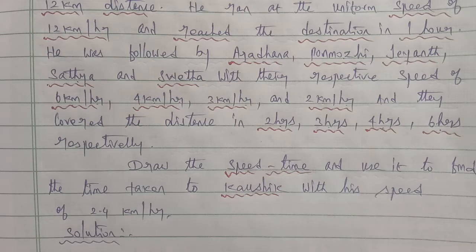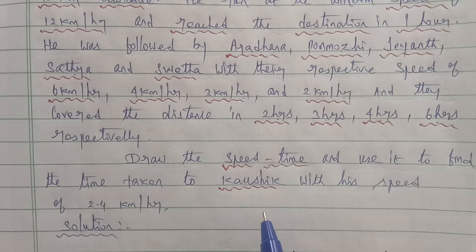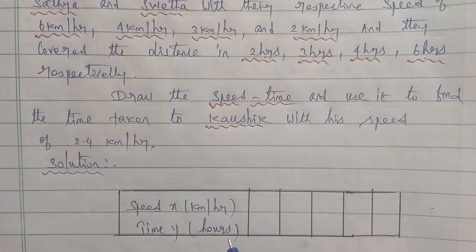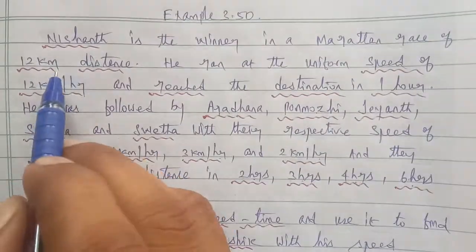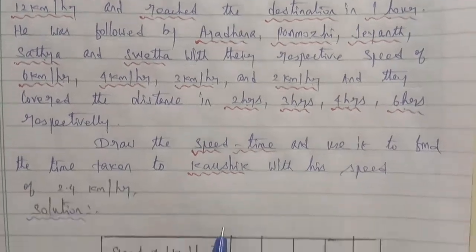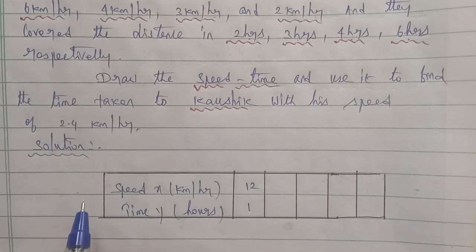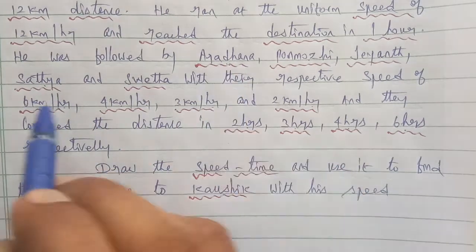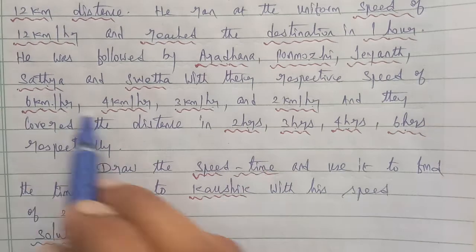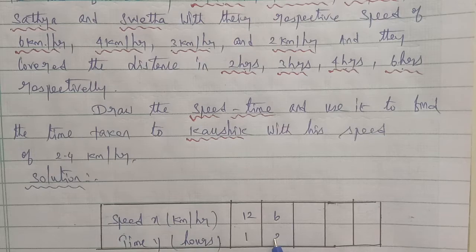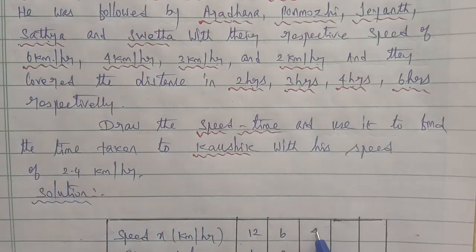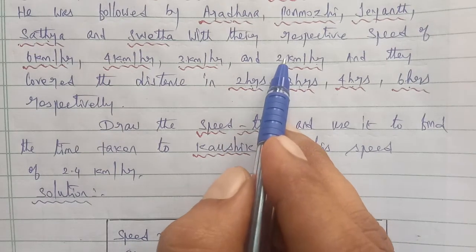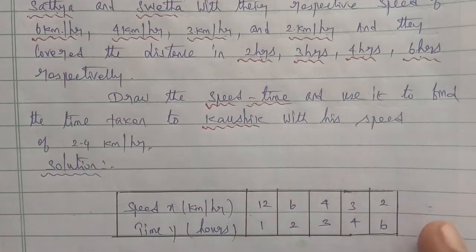I'll make a table. Speed on the x-axis and time on the y-axis. First, Nishanth: 12 km distance in 1 hour, so 12 and 1. Next character: 6 km speed, 2 hours to reach, so 6 and 2. Next: 4 and 3. Next: 3 and 4. Last one: 2 and 6. So the table shows x values are 12, 6, 4, 3, 2.